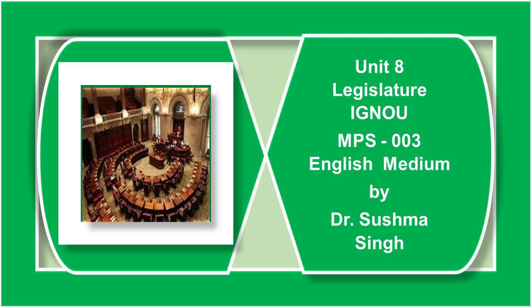Rajya Sabha, or the Council of States, is the upper house of India's bicameral parliament. Three sets of reasons guided the adoption of a bicameral legislature for the Union of India. First, Rajya Sabha, as the name implies, was to be the chamber for representing and protecting the rights of the states in the federal polity. Rajya Sabha therefore has equal role and status to that of the Lok Sabha in the electoral college for choosing the President.